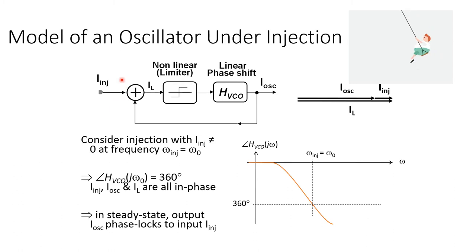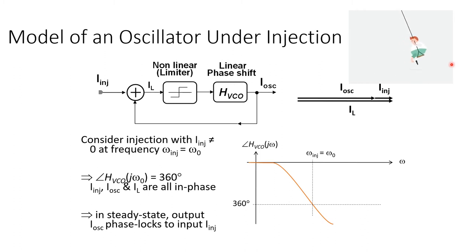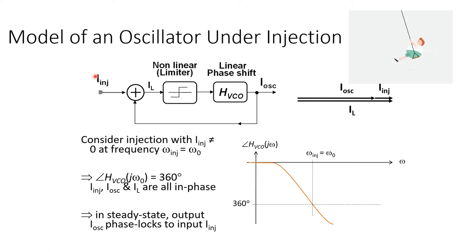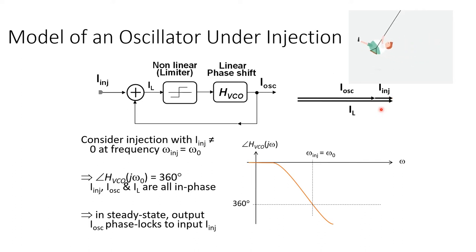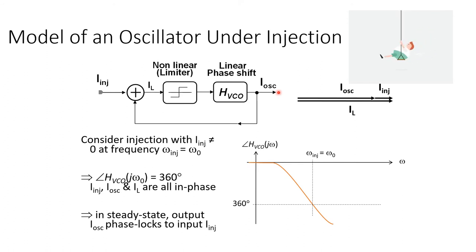What happens when we introduce an injecting input into this model? Let's first consider the case where we're injecting the oscillator right at its resonant frequency — perfectly in sync with the natural frequency of the oscillator. Then the steady-state condition is that the injecting input is precisely phase-aligned to the output phasor of the oscillator, so the two phasors superimpose constructively. The two superimposed waveforms at I_L are therefore at the exact same phase but with higher magnitude. The limiter serves to limit the resulting magnitude back to I_os.